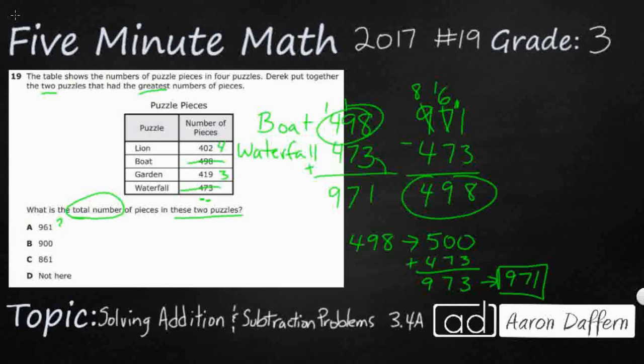Yep, I keep getting this same answer. So the answer is going to be D, not here. So we know how we could have gotten the answer A. I bet you a lot of students probably chose A on this one because they figured it couldn't be not here. 961 is close to 971, but it's not the same thing. So it is not A, but I bet you that's an incorrect answer that was chosen quite a bit.